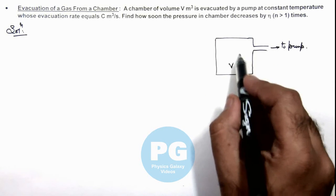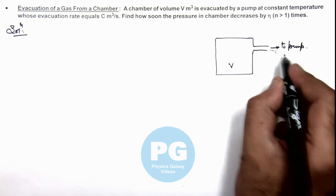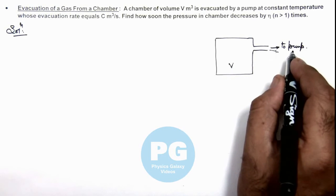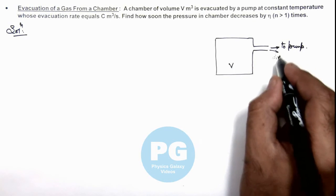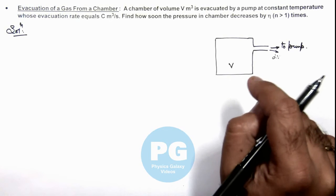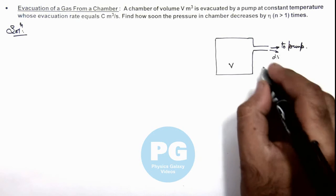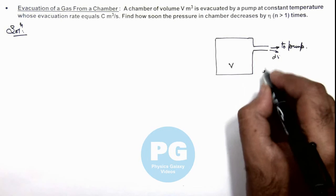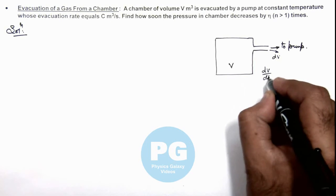So whenever gas expands, it expands in the direction of the pump, where the volume increases to dV and dV is pulled by the pump. And here we are given that evacuation rate is C, that is dV/dt equals C.